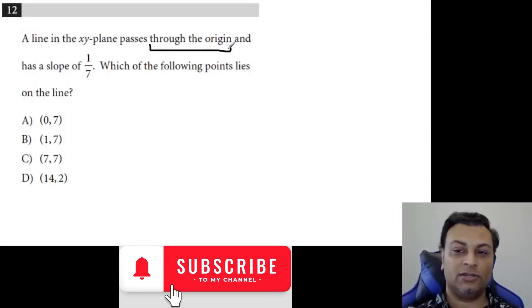If you pass through the origin, so if we think about y equals mx plus b, passing through the origin will give you a y-intercept of 0. So the b itself has to be 0.